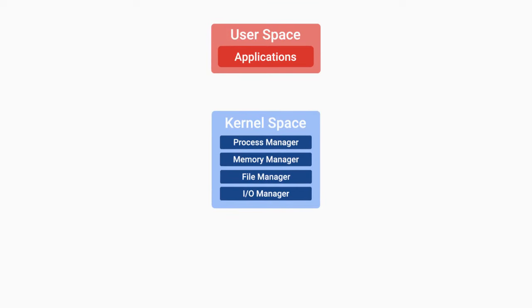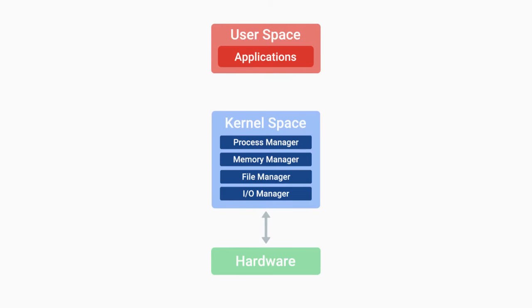There are two main parts to an operating system: the kernel and the user space. The kernel is the main core of an operating system — it talks directly to our hardware and manages our system's resources. As users, we don't interact with the kernel directly. Instead, we interact with the second part of an operating system, the user space. The user space is basically made up of everything outside the kernel — things that we interact with directly, like system programs, user interfaces, etc.